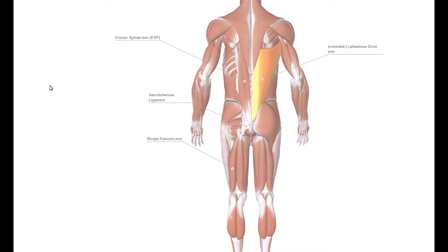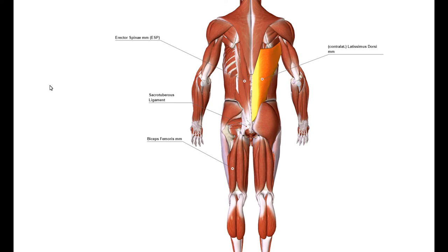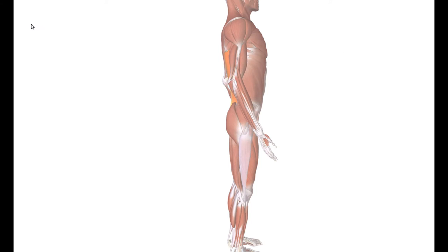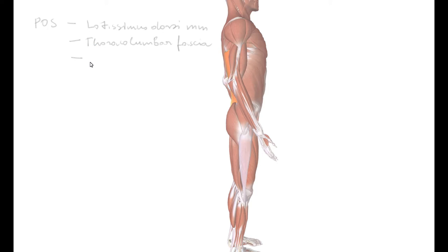During the hip extension phase, the Deep Longitudinal Line system will have a tendency to overcompensate for a weak Posterior Oblique System. In the previous lesson we looked at the Posterior Oblique System (POS). The Deep Longitudinal Line will overcompensate for its weakness. The Posterior Oblique System consists of latissimus dorsi, thoracolumbar fascia, and contralateral gluteus maximus. As we can see, there is not a whole lot of difference between the Posterior Oblique System and the Deep Longitudinal Line.